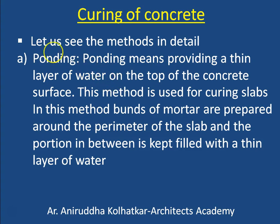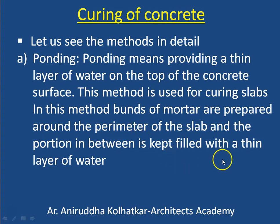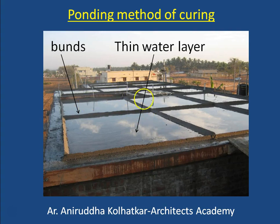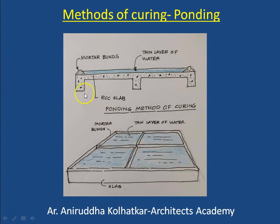The first method is called ponding, which means providing a thin layer of water on top of the concrete surface. This is normally used for curing slabs. In this method, bunds of concrete mortar are prepared around the perimeter of the slab, and the portion in between is kept filled with a very thin layer of water. Because of the presence of water, the temperature of the concrete remains low and it prevents further evaporation of water from the concrete. This can be seen in the photograph where you can see the completed slab, the mortar bunds, and the layer of water provided within those bunds. The same thing can be seen in the sketch showing the cross section of the slab.